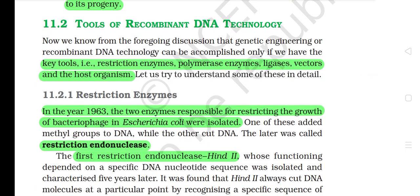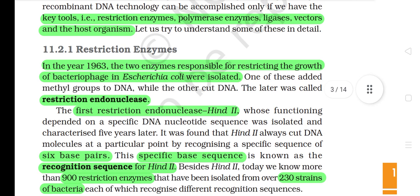11.2 Tools of Recombinant DNA Technology. Genetic engineering or recombinant DNA technology can be accomplished only if we have the key tools — restriction enzymes, polymerase enzymes, ligases, vectors, and the host organism. Let us try to understand some of these in detail.